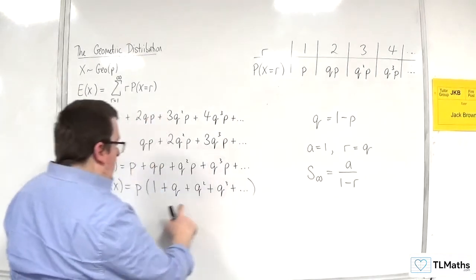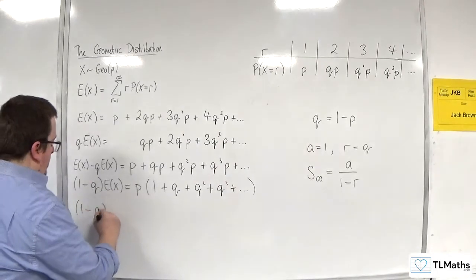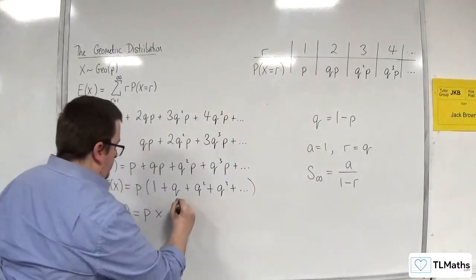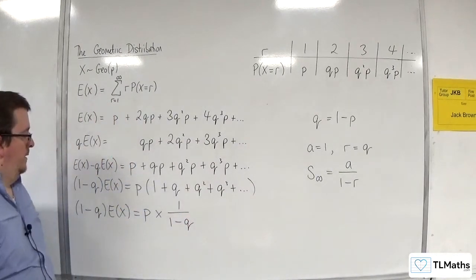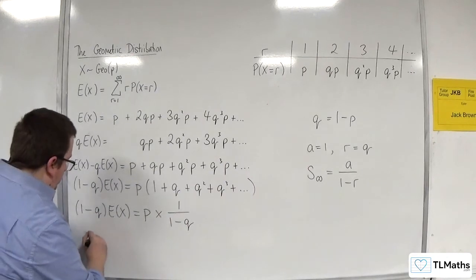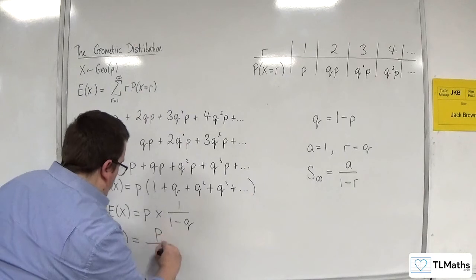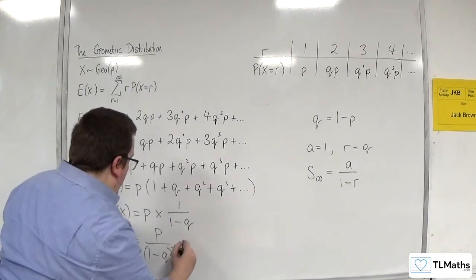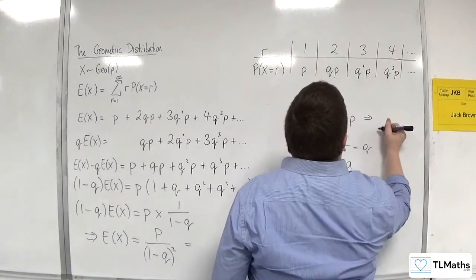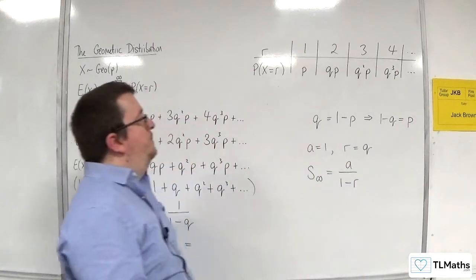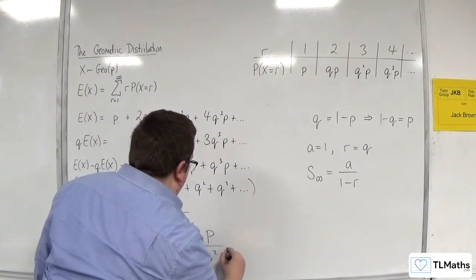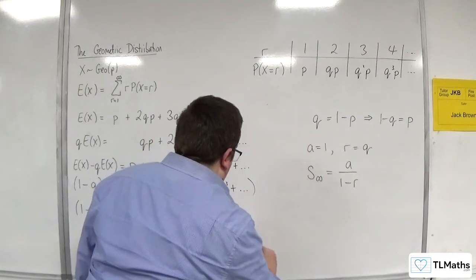So, that whole bit there, that infinite series, I can write as 1 over (1 - q). So, what I can do is then write that as p over (1 - q). Divide both sides by (1 - q). So, I've now got p over (1 - q) squared. Now, if q is equal to 1 minus p, then 1 minus q has got to be equal to p, just by rearranging that equation. So, if 1 minus q is p, I've actually got p over p squared. Now, dividing top and bottom by p, I get 1 over p.